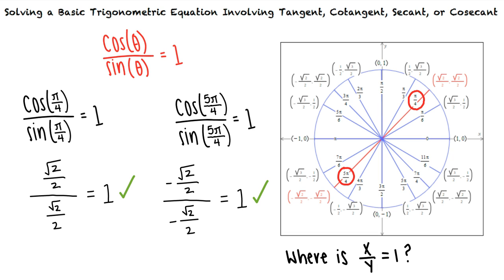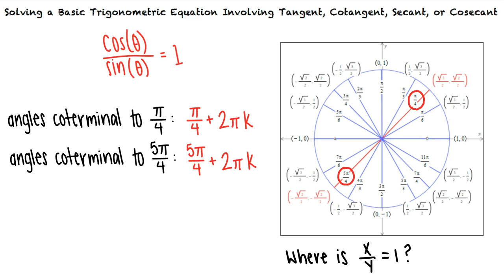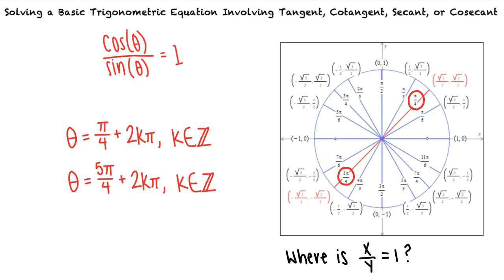These coterminal angles can be obtained by adding integer multiples of 2 pi to each angle. This means we can write the finalized solutions to our equation in the following format. This notation implies that k is an integer. We also note that we can write this solution in a condensed form.